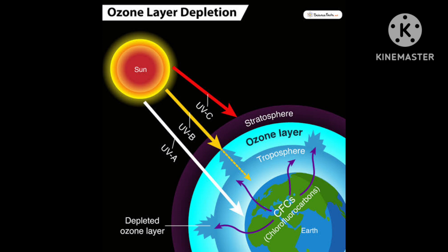In photochemical smog, two key pollutants emitted are hydrocarbons — that is, unburned fuel — and nitric oxide (NO). When these pollutants build up to sufficiently high levels, a chain reaction occurs from their interaction with sunlight.